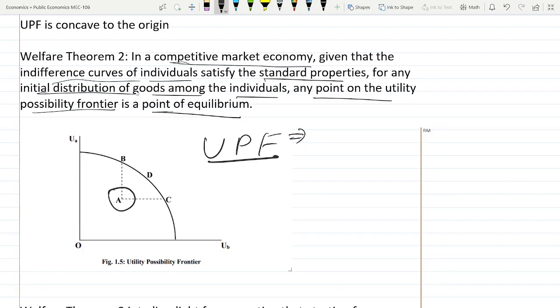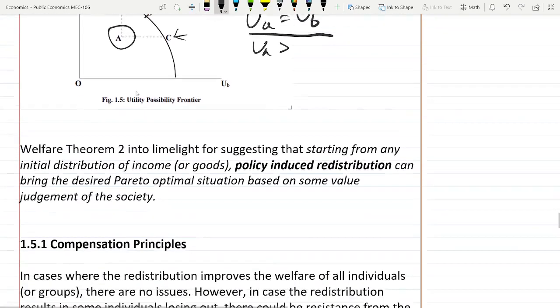Then both the users should have equal utility. We need to move this point to point D where both user A and B will get equal utility. Otherwise, if we want user A utility greater than user B, then we will move it to point B. In the reverse case, we will move it to point C. So this is the utility possibility frontier.